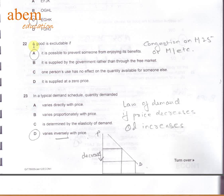In question number 22, again, a good is excludable if it is possible to prevent someone from enjoying its benefits. For example, the motorways is a public good, but congestion on M25 or M1 etc. will exclude other cars to be in that space.